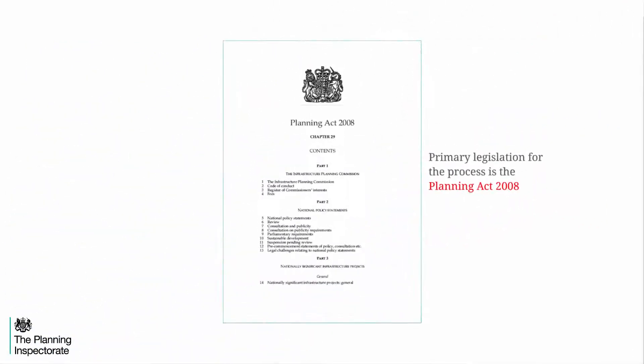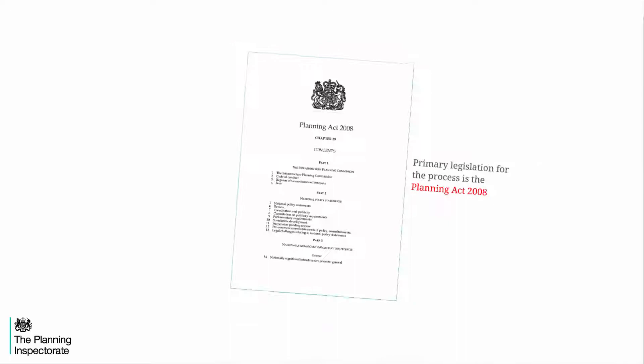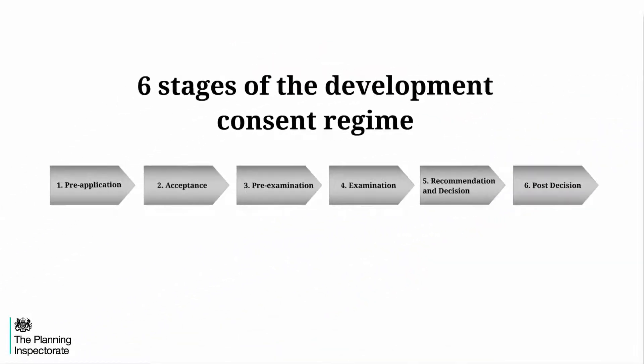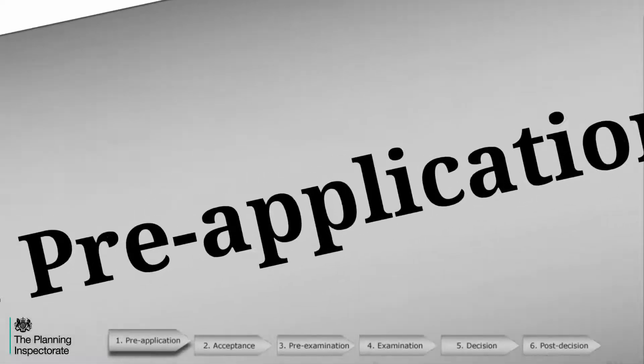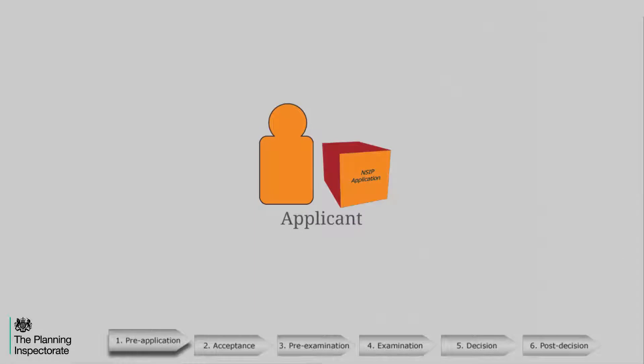The primary legislation that underpins the Development Consent Regime is the Planning Act 2008. There are six stages to the Planning Act 2008 process. At the pre-application stage, the applicant is at the centre of the process and has full responsibility for developing the project.